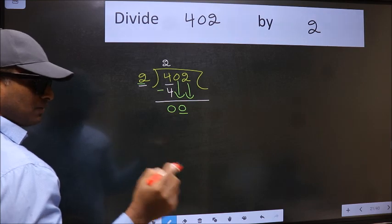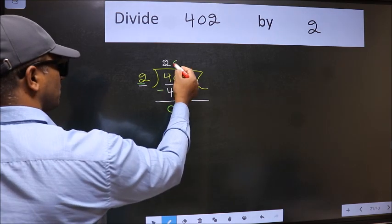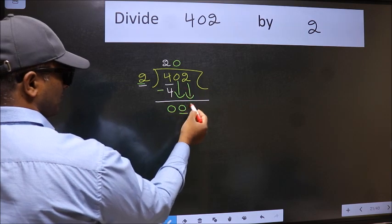And the rule to bring down the second number is we should put 0 here. Then only we can bring this number down.